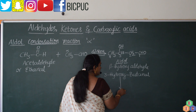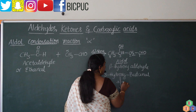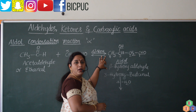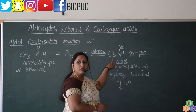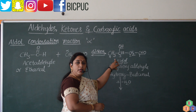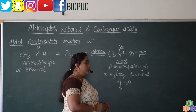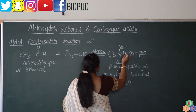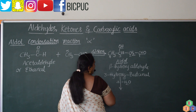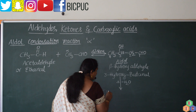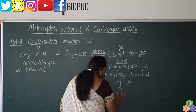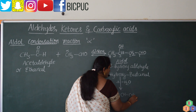What happens to this aldol product? Upon heating, it will eliminate a molecule of water. Till this point, the reaction is called the aldol reaction and the product is the aldol reaction product. After this, upon heating, they eliminate a molecule of water — then we call it the aldol condensation reaction. The OH from one end and the H from the alpha carbon go out as water. We are left with CH3, then CH, linked to another CH by a double bond, and then CHO.